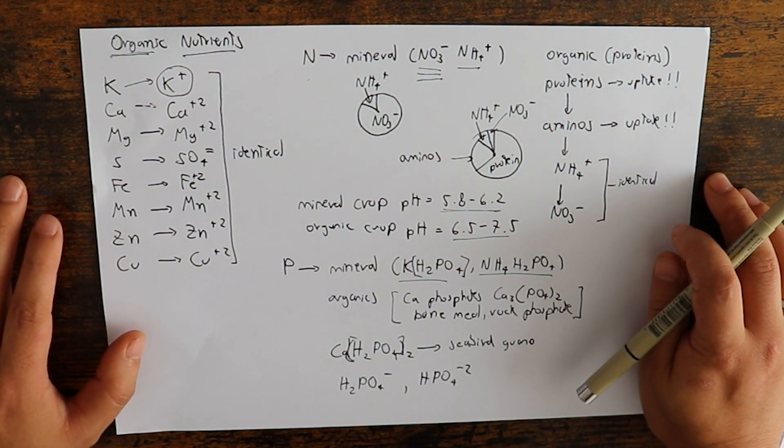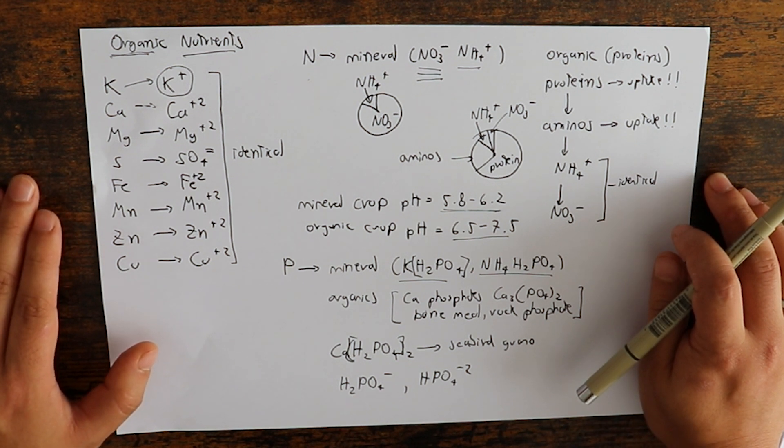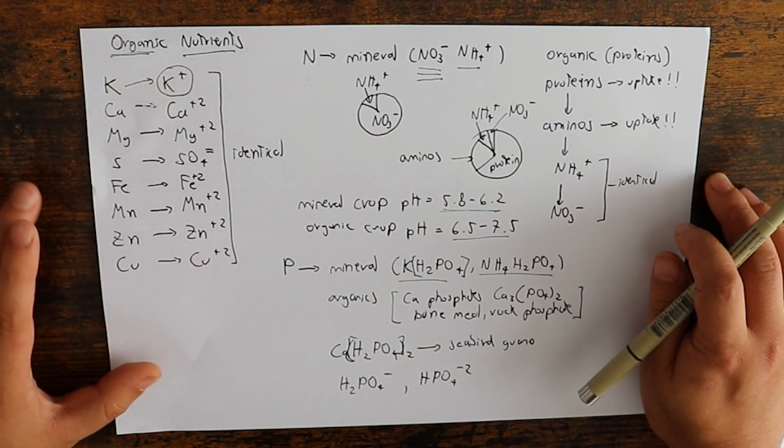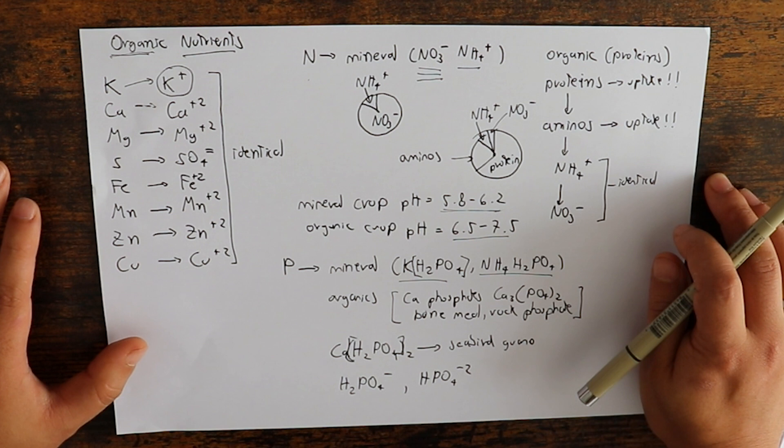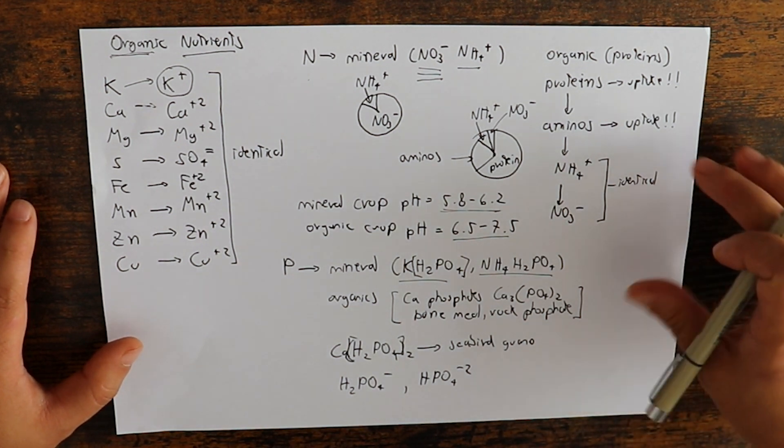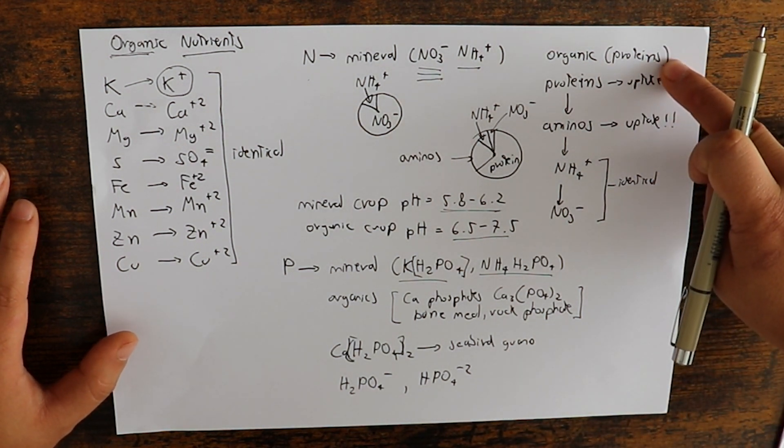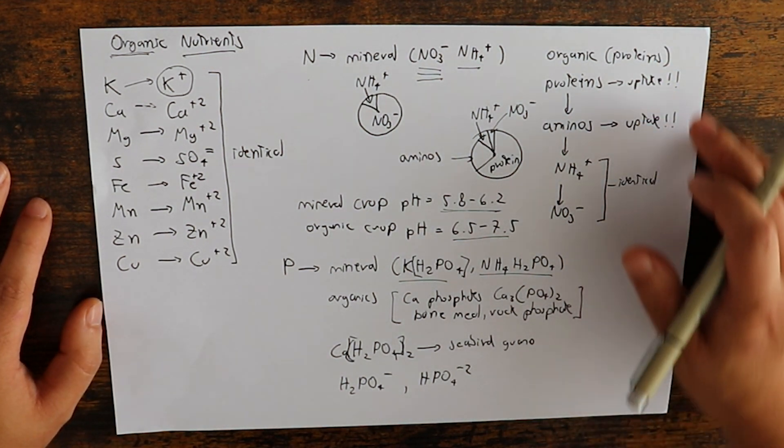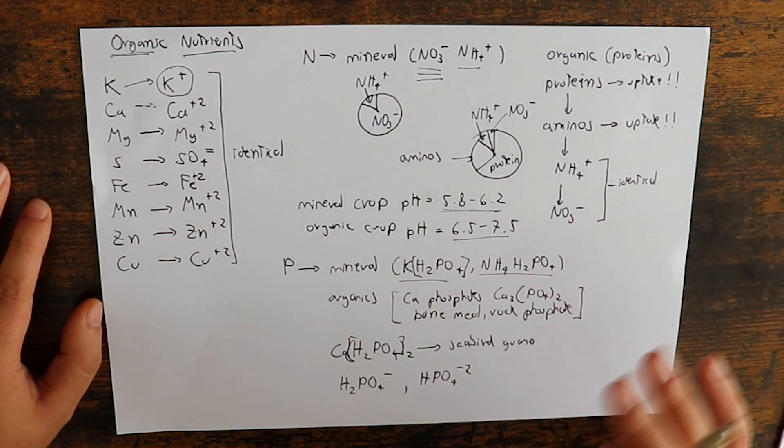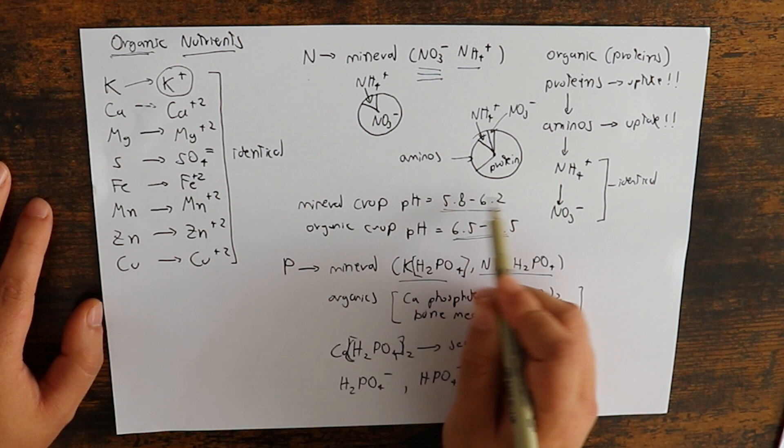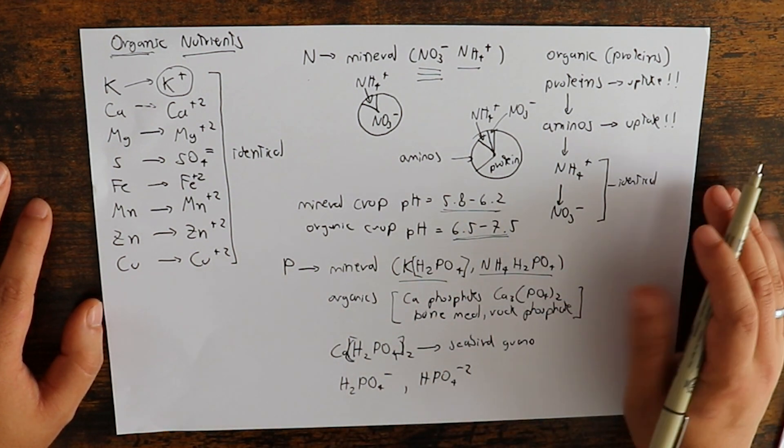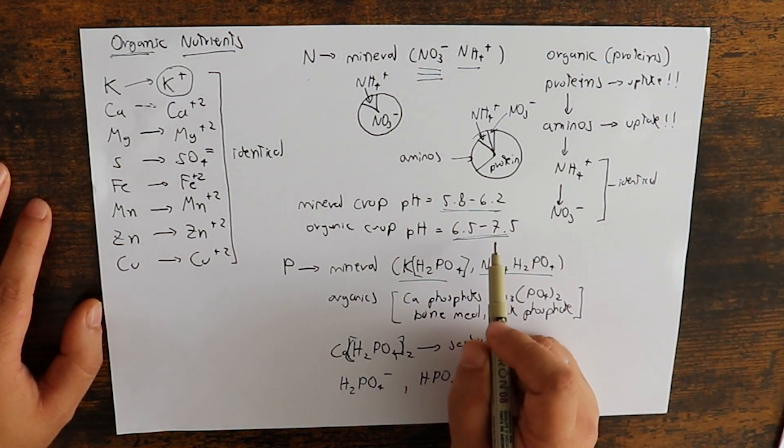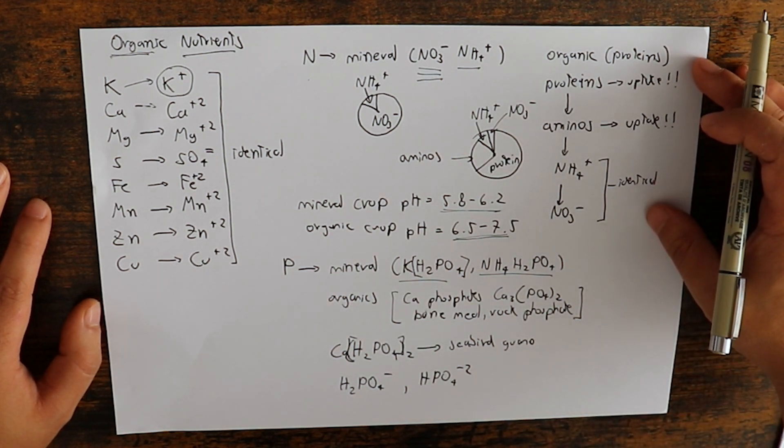So when you go for an organic hydroponic nutrient, you just need to make sure that your nutrient ratios are, these nutrients here, are the same as you would use in a mineral crop. And you also need to make sure that you have enough protein to sustain all the nitrogen uptake of the plant and that you have enough microbes to carry out this process. You also need to ensure that your nitrification processes are going on.